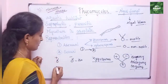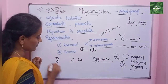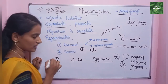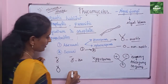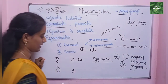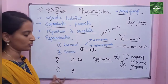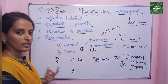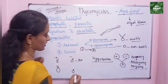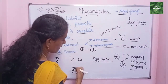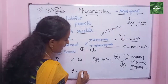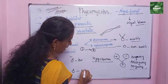Next is anisogamy. In anisogamy, one gamete is large and the other is small. So morphologically different — large gametes and small gametes. When morphologically different gametes fuse, it is called anisogamy.